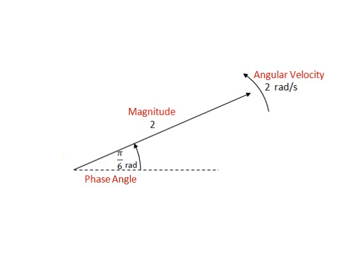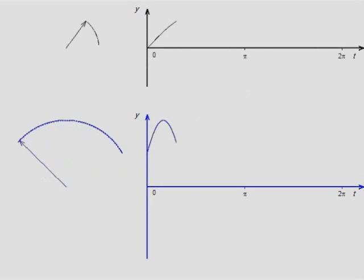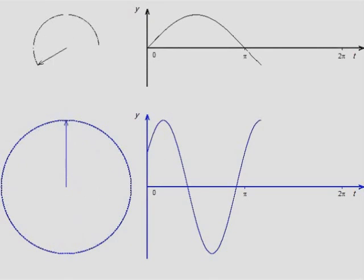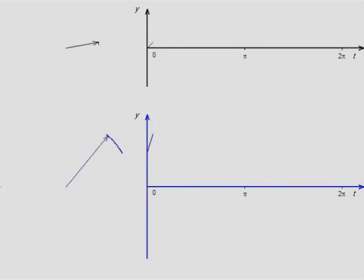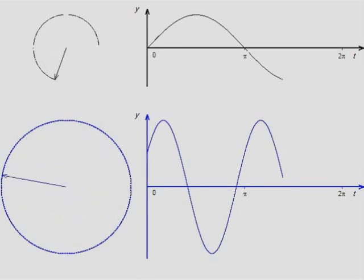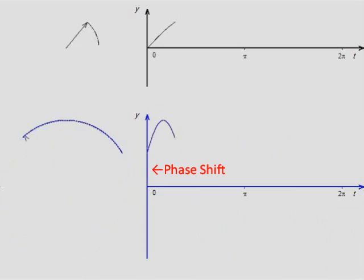In this example, we consider a phasor of magnitude 2, angle of velocity 2 radians per second, and phase angle pi over 6 radians. Notice the sine wave being projected — it has an amplitude of 2 and is slightly shifted to the left.